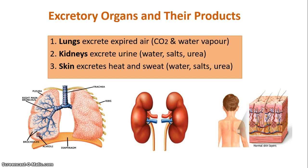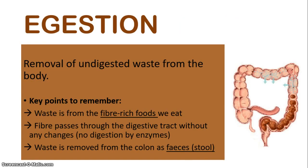So the lungs, the kidneys, and the skin are the excretory organs you need to know, along with their products. Now let's move on to look at ingestion. Ingestion is the removal of undigested waste from the body. The key point to remember is that this undigested waste comes mostly from the fiber-rich foods that we eat — fruits, vegetables, and oats.